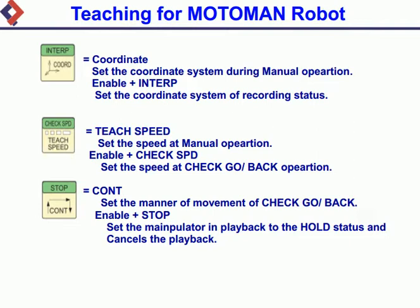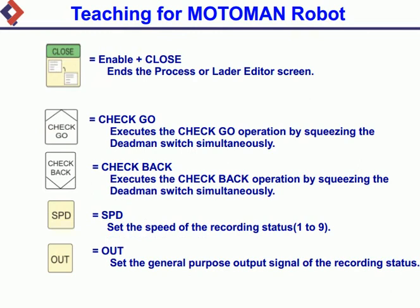Cancels the playback. Enable + Close: ends the process or ladder editor screen. Check Go: executes the Check Go operation by squeezing the Deadman Switch simultaneously. Check Back: executes the Check Back operation by squeezing the Deadman Switch simultaneously.